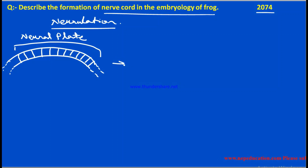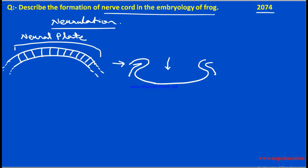Where the ectoderm meets the neural plate, a fold comes out. This is the neural crest or neural fold. This part becomes elevated, and a depression — a groove — also forms there.